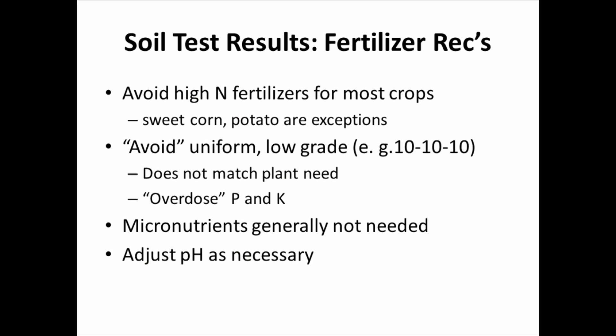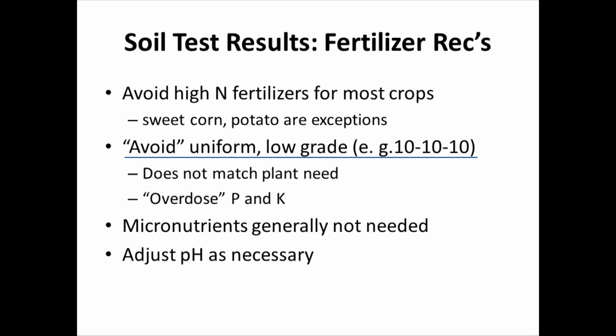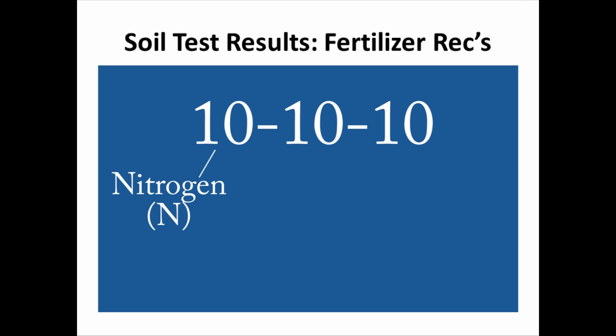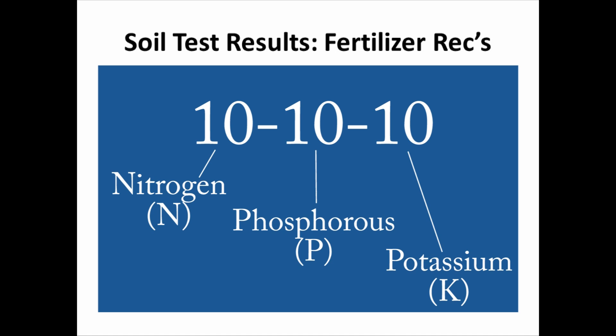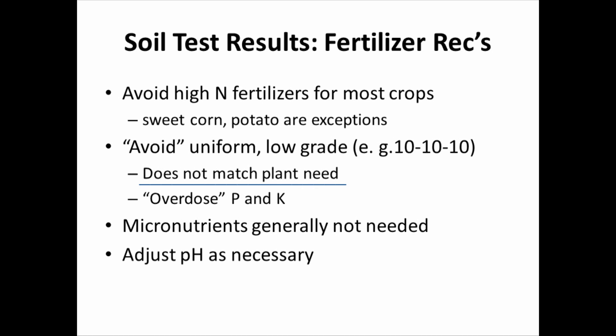For general fertilizer recommendations, I recommend avoiding high nitrogen fertilizers for most crops. Sweet corn, potato, and turf grass are some exceptions with a higher nitrogen demand. Also avoid uniform, low-grade fertilizer — the classic example is a 10-10-10. The three numbers on a fertilizer bag are always: first number is nitrogen, second is phosphorus, last is percentage of potassium — so 10% nitrogen, 10% phosphorus, 10% potassium. Plants don't use nutrients in that same ratio, so using a 10-10-10 basically overdoses the phosphorus and potassium, and phosphorus has an environmental implication.